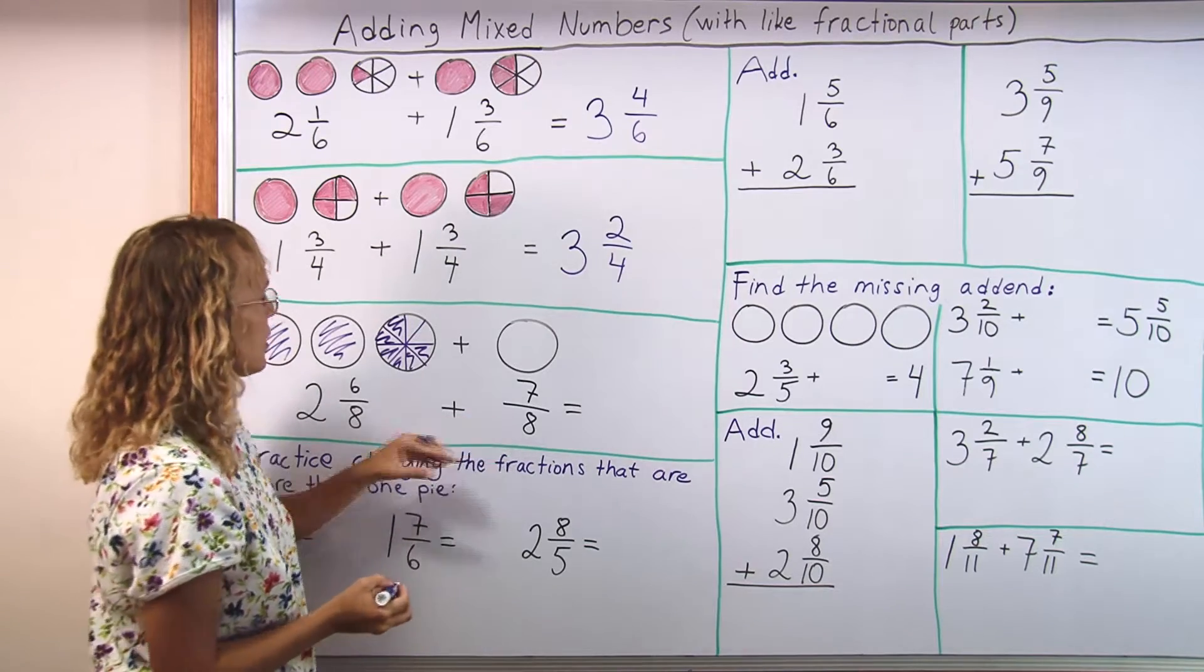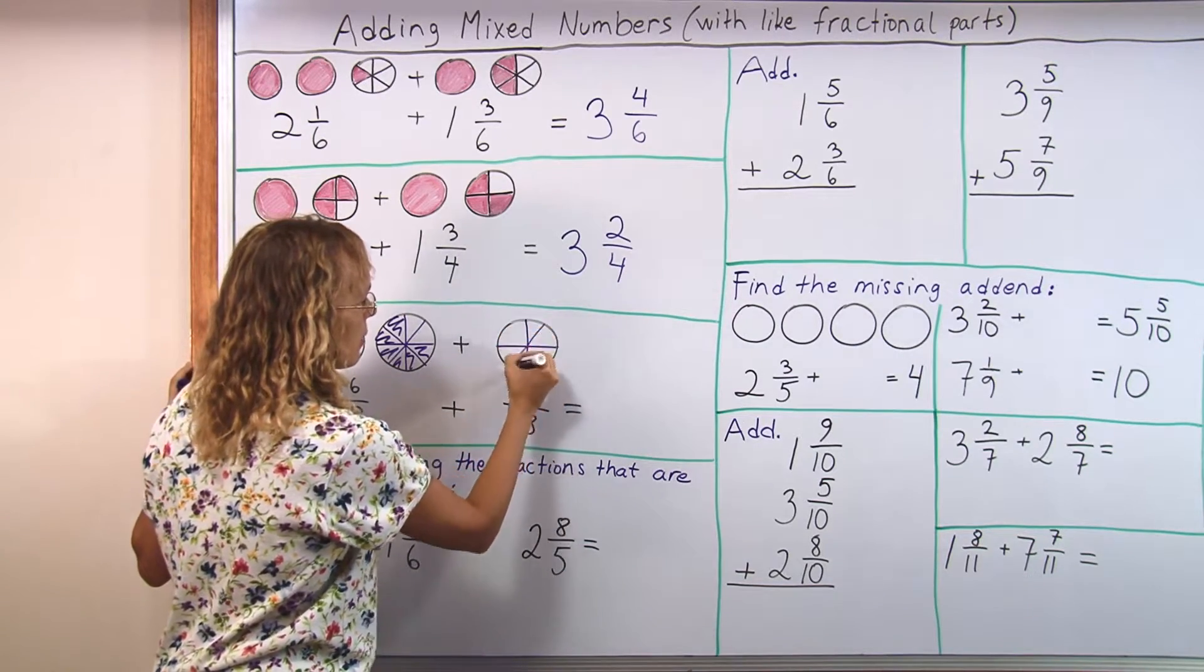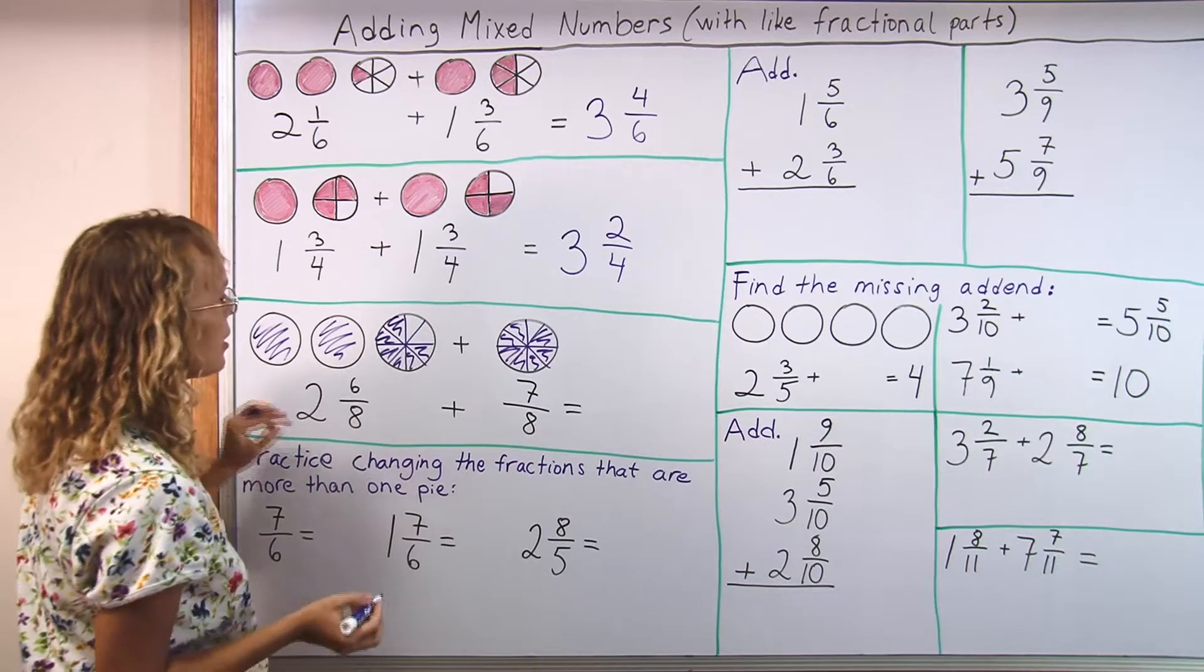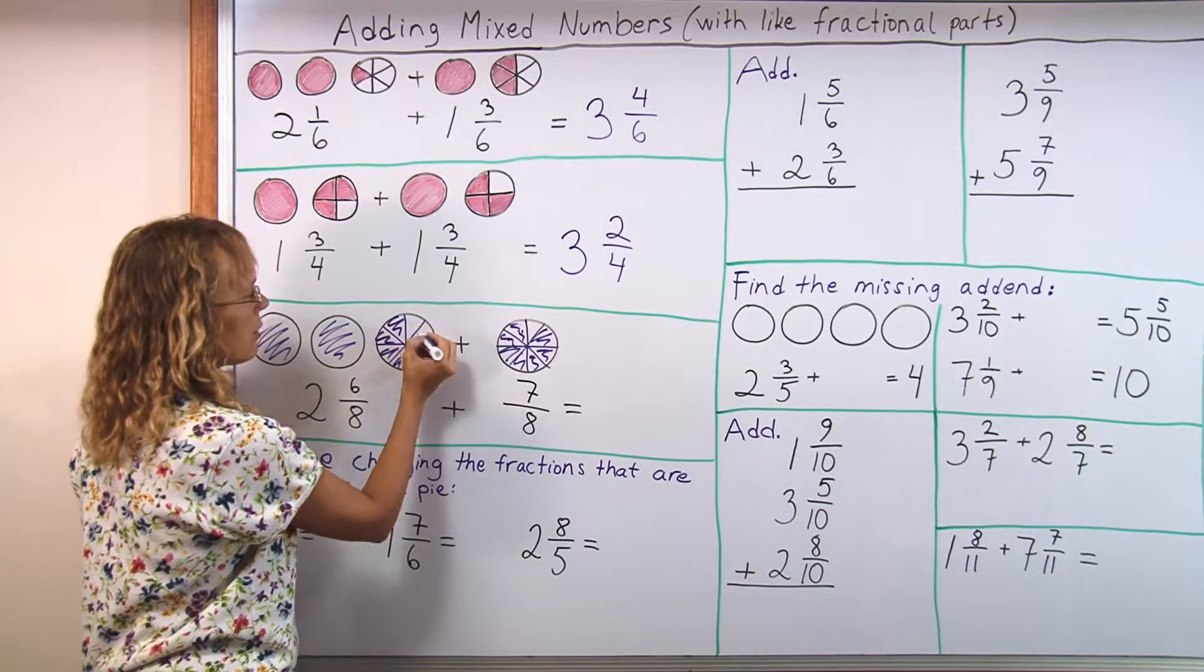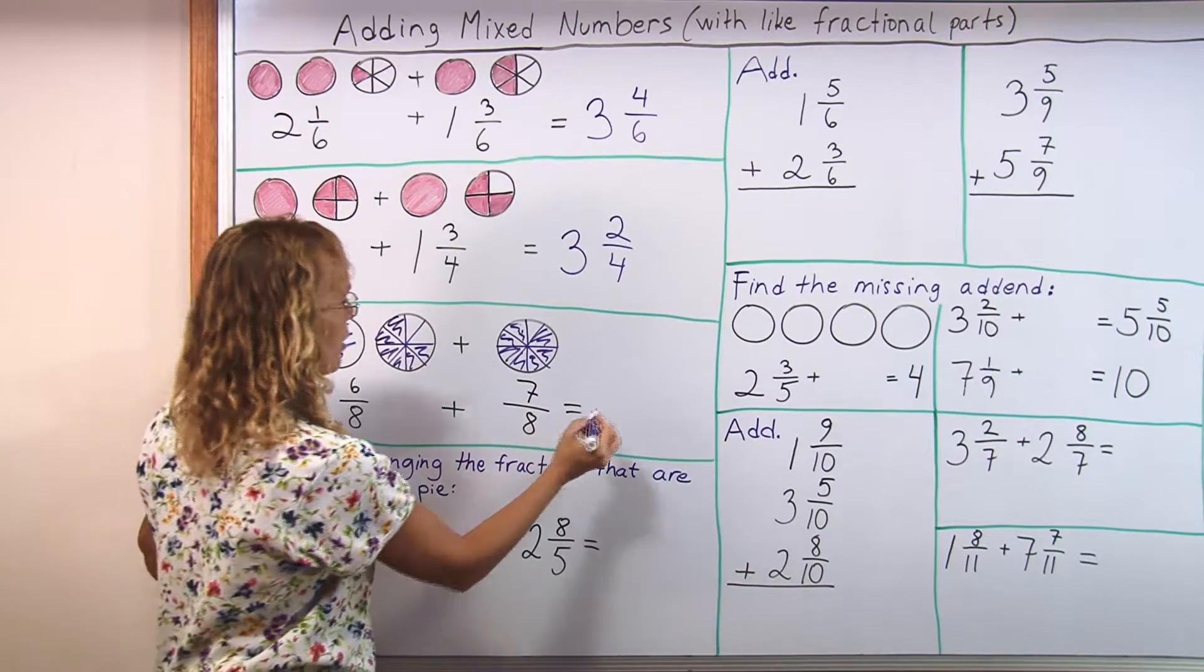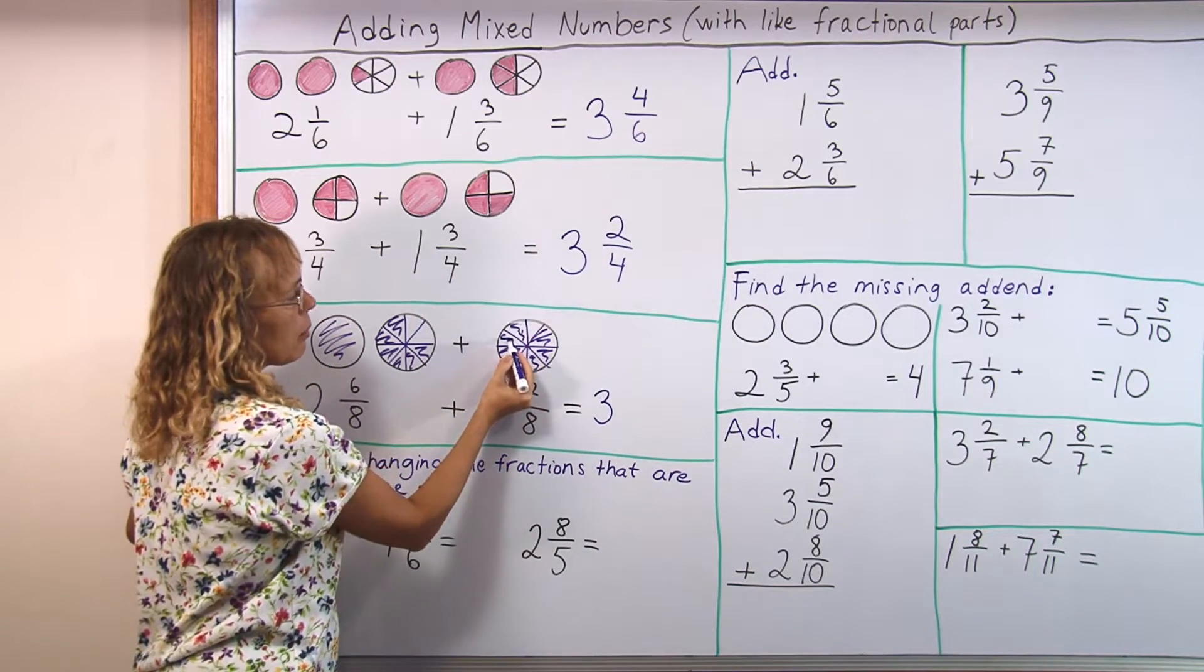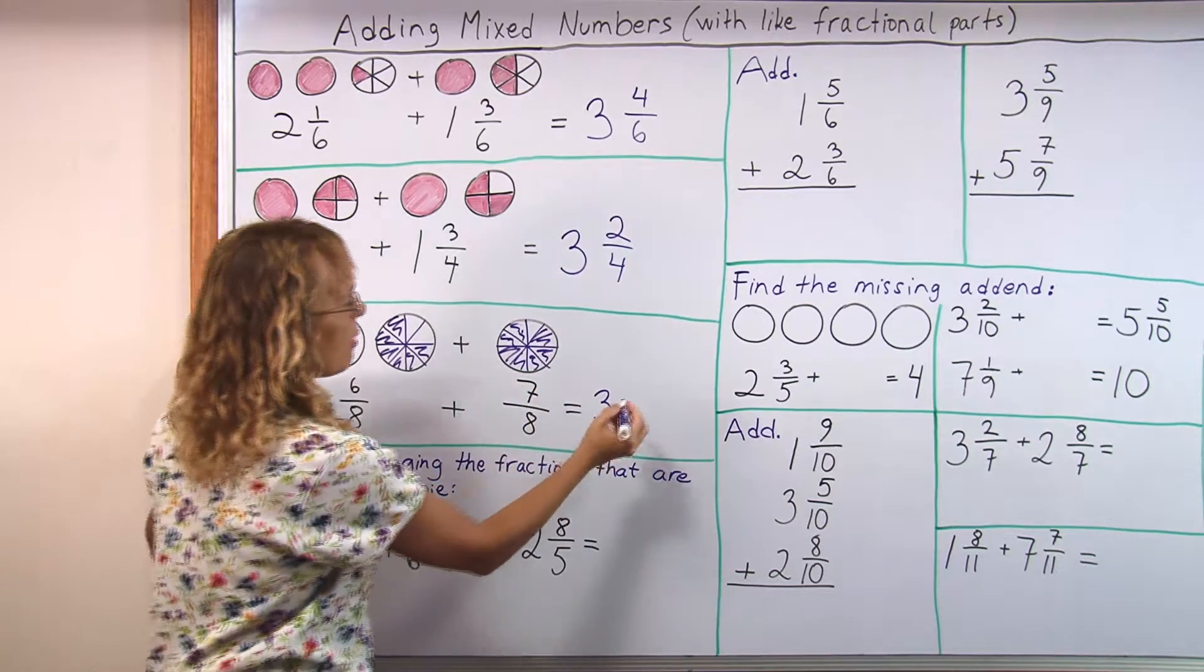And then plus 7 eighths. Divide this into eighths again. Color 7 of them, all but 1. And what happens is, 2 of these colored parts would go here to fill this in. So we would again get 3 whole pies, right? And then, since 2 of these went away, so to speak, we will have 5 eighths here.